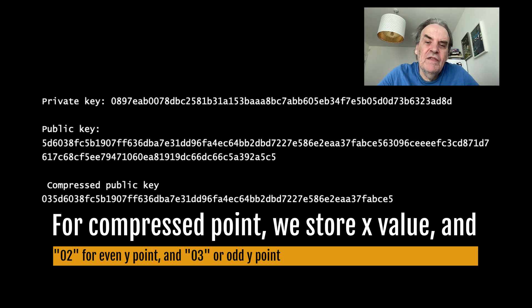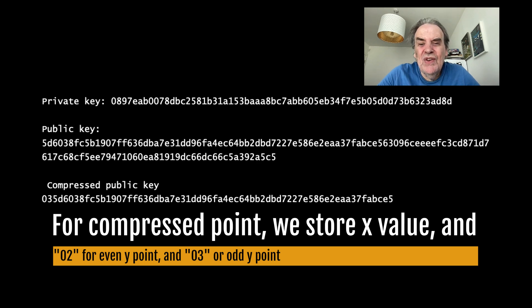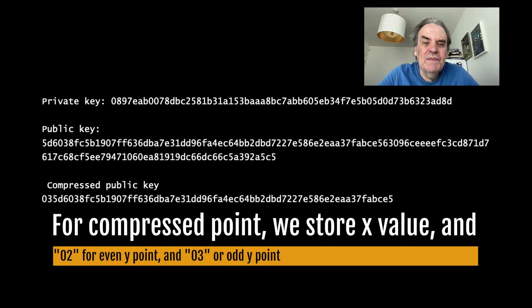If we have the x value we can compute a y value, but there will be two of these y values — they will either be odd or even. When we take the square root of an integer in our normal maths we end up with a plus and minus value, which is equivalent in this case.